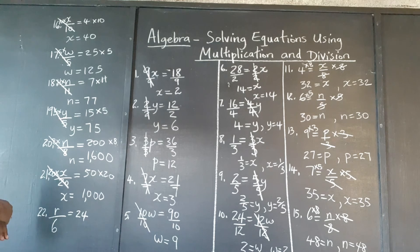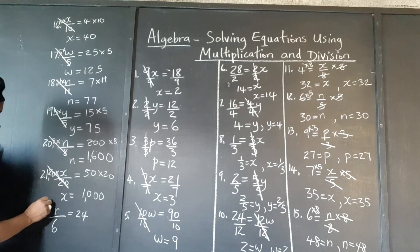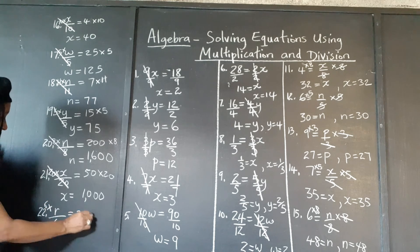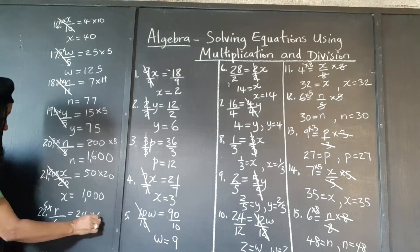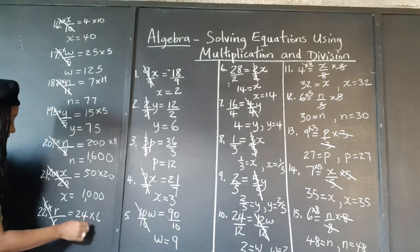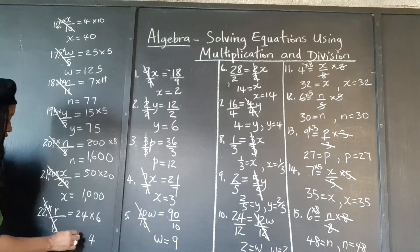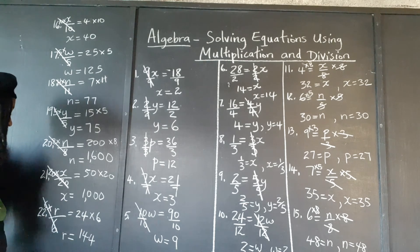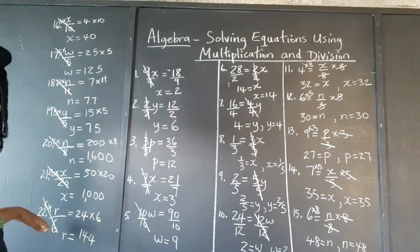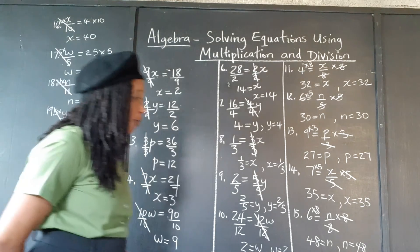And finally, which number when you divide it by 6 gives 24? We're going to multiply both sides by 6. The 6s cancel out. 24 times 6: 6 times 4 is 24, 6 times 2 is 12, and that gives us 144. So 144 divided by 6 gives 24.